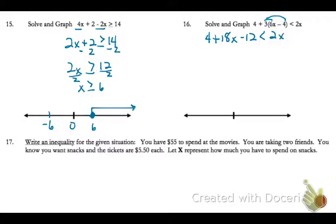Now I'm going to combine my 4 minus 12, so that will give me negative 8 less than 2x. I'm going to combine my x's by subtracting 2x. So that's 16x minus 8 is less than 0.